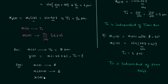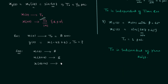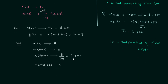Now we perform time scaling on x(t+6) to get x(4t+6). Time scaling does affect the fundamental time period. Using the general rule, the new FTP = t₀/|a| = 8/|4| = 2 seconds. Next we perform the time reversal to get x(−4t+6). Since time reversal has no effect on the fundamental time period, it remains 2 seconds. So the fundamental time period of y(t) is 2 seconds.